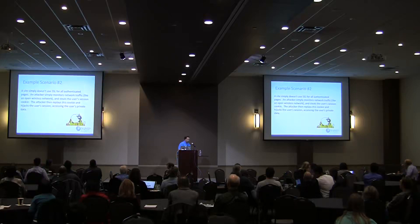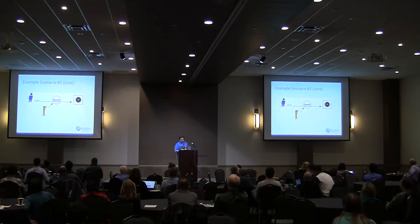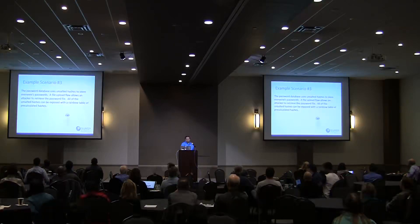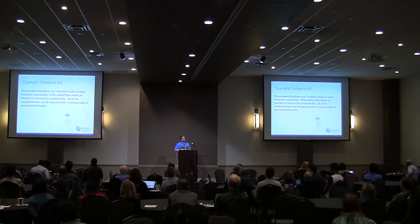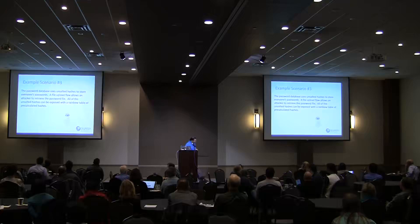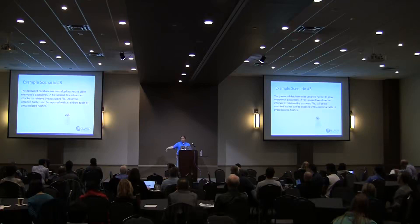Another example: the site doesn't use SSL for all authenticated pages. An attacker just monitors network traffic, steals the user session cookie, and replays that cookie to hijack the user's session — that's essentially what Firesheep did. Scenario three: a password database uses unsalted hashes to store everyone's passwords. A file upload flaw allows an attacker to retrieve the password file, and all the unsalted hashes can be cracked using a rainbow table.